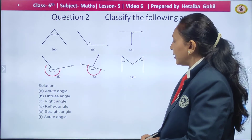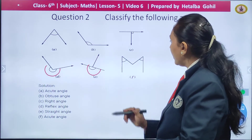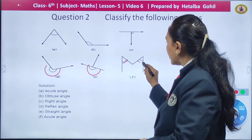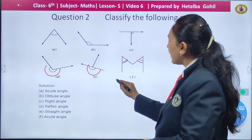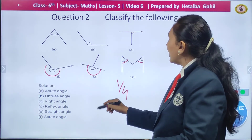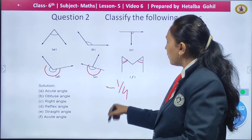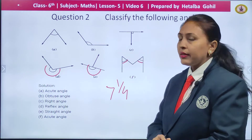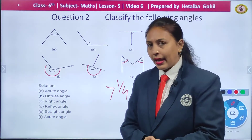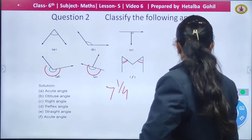Similarly, the last one — you can see two angles marked here, but they are less than one fourth, so we classify it as an acute angle.